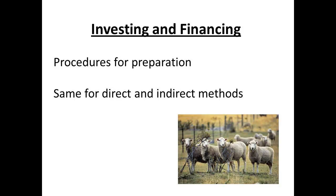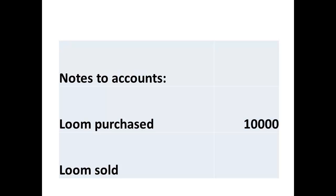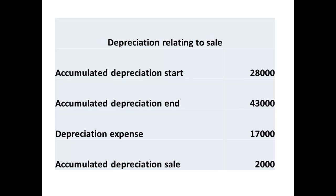We can now turn to the figures for the sections relating to investing and financing activities. Note that these are the same for both the direct and indirect methods. The notes to the accounts tell us that a loom was sold during the year; the original cost of the loom was $10,000. We can next determine the accumulated depreciation related to this sale. The difference between the accumulated depreciation at the start and end of the year can be obtained from the balance sheets, and the depreciation expense from the income statement. Subtract the depreciation expense and we have a figure for accumulated depreciation relating to the sale.